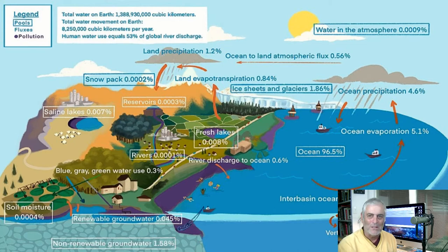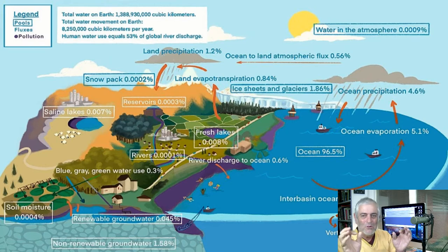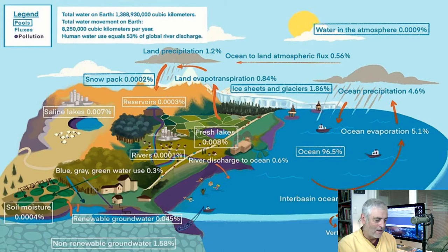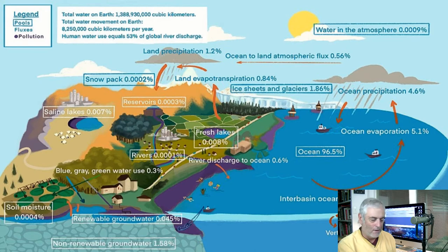Water is a polar molecule — the two hydrogens on one side give it a positive charge and the oxygen gives it a negative charge. That's what makes water the 'universal solvent' — you can dissolve many things in it, including sugars and salt. Ions are released, breaking bonds and floating around in water, and we call it salt water. That is a snapshot of the hydrologic cycle showing the amount of water in each component.